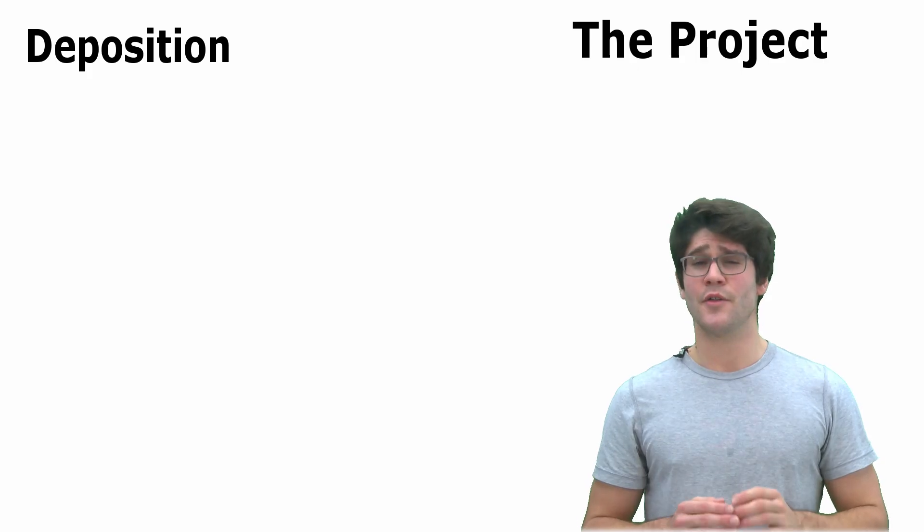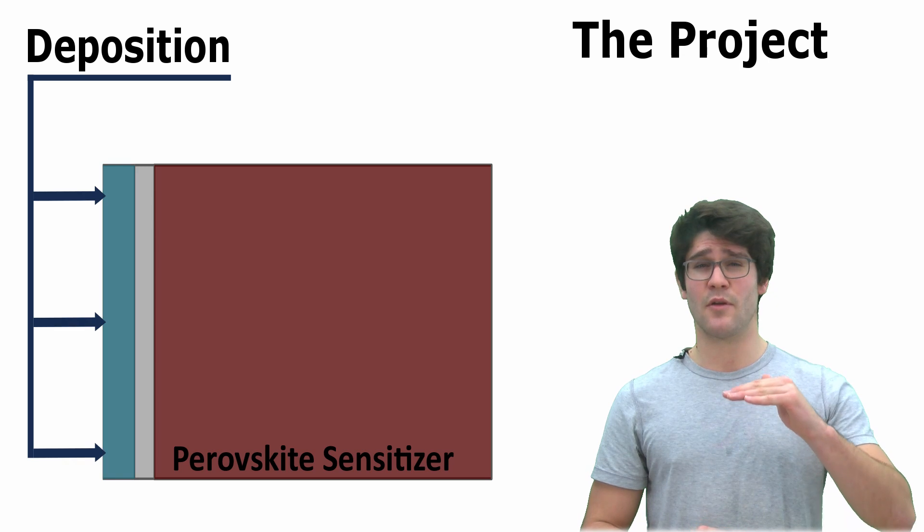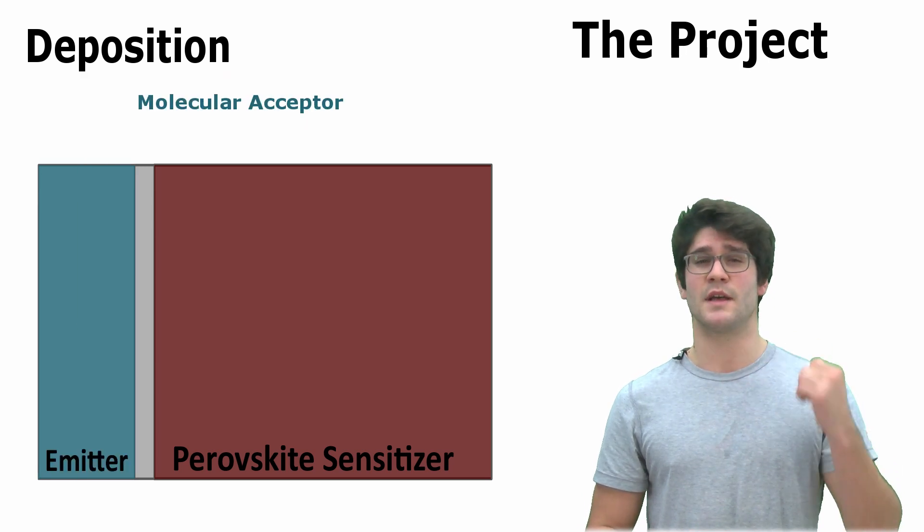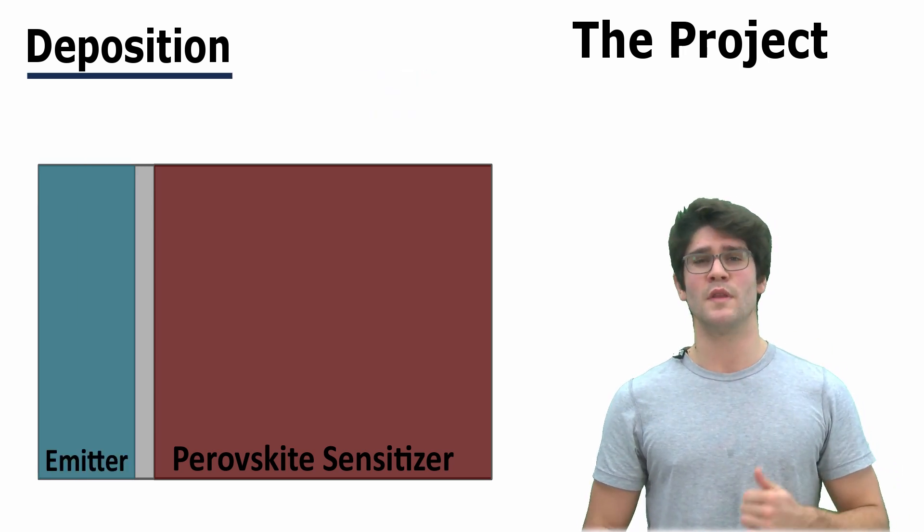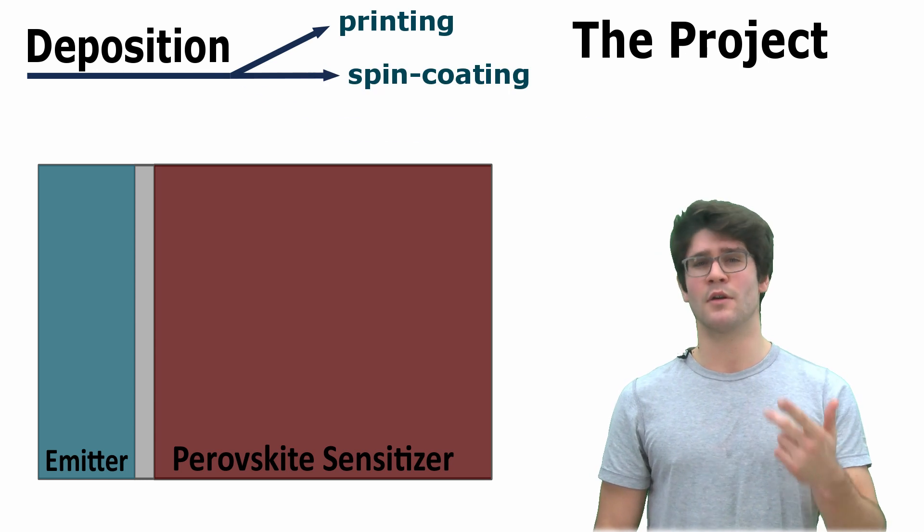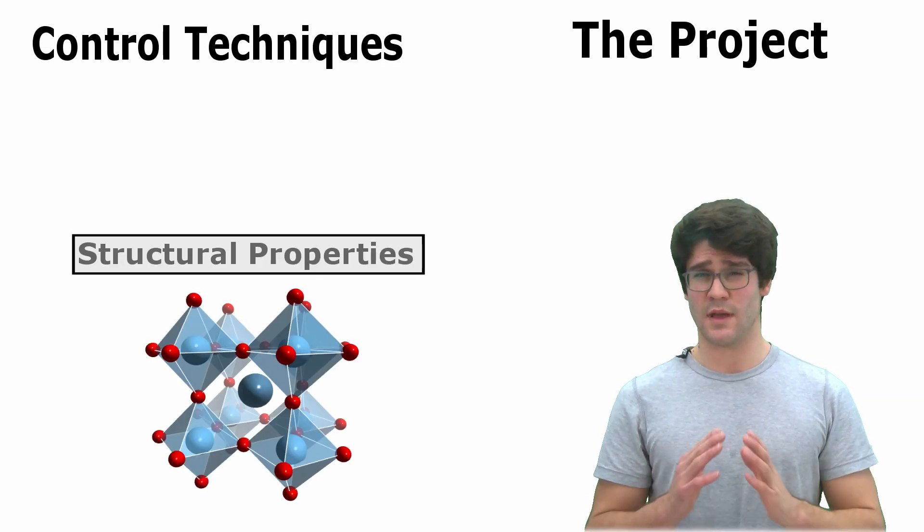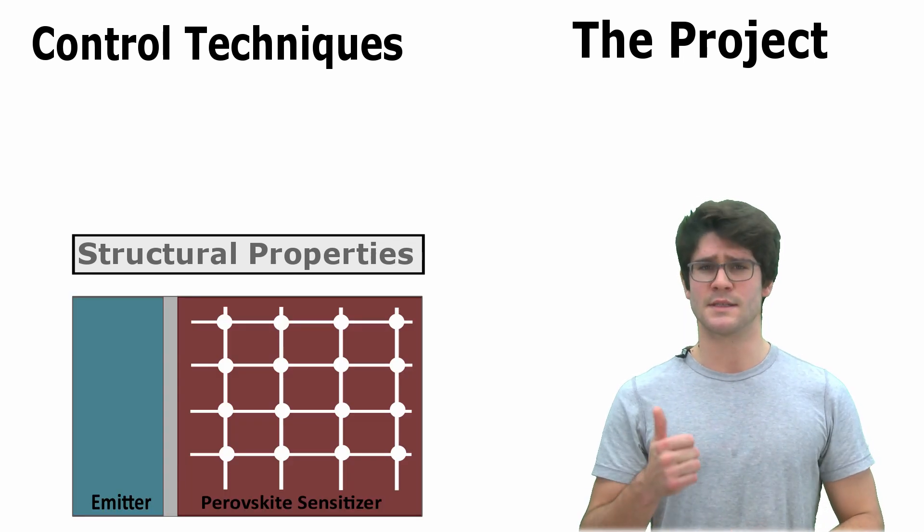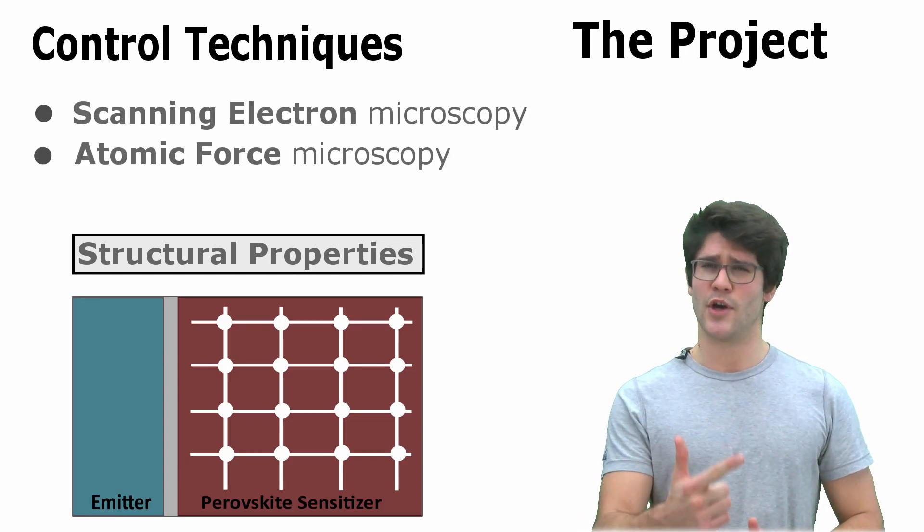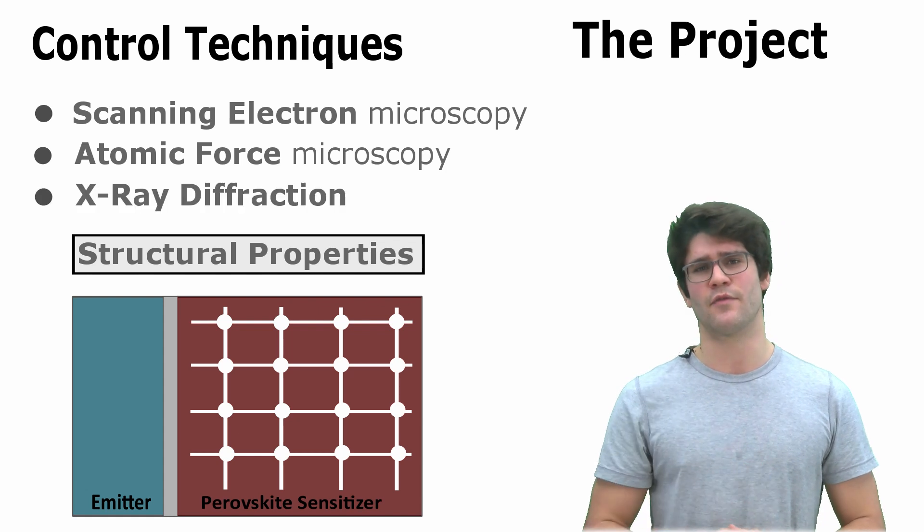And then, on top of the perovskite, we will deposit our emitter, a small molecule acceptor like BPEA or rubrene, with either spin coating or thermal evaporation. The structural properties of the two materials and the important interface will be controlled using scanning electron microscopy, atomic force microscopy and X-ray diffraction.